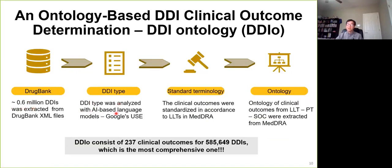Then the second step, we use AI-based language models. Basically, we use the Google Universal Sentence Encoder to analyze these descriptions and summarize the drug-drug interaction types.